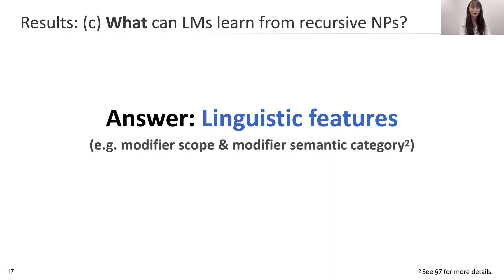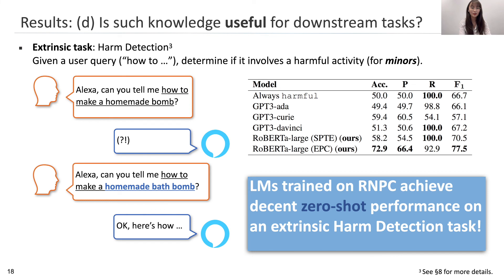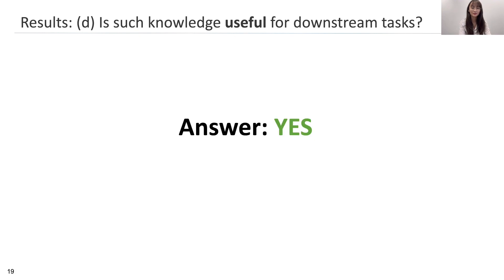In summary, our answer to question C is: from RNPC, models can learn relevant linguistic features like modifier scope and modifier semantic category, which we elaborate in the paper. Finally, question D: is the knowledge useful for downstream tasks? The short answer is yes. Models trained on RNPC can achieve decent zero-shot performance on an extrinsic harm detection task compared to strong baselines including GPT-3. So our answer to question D is also yes.